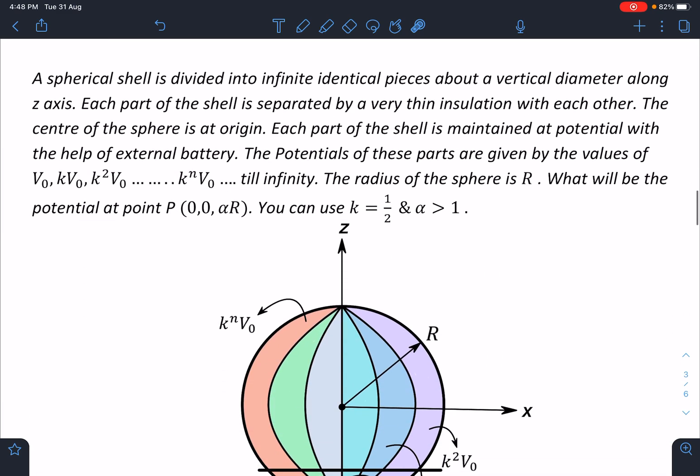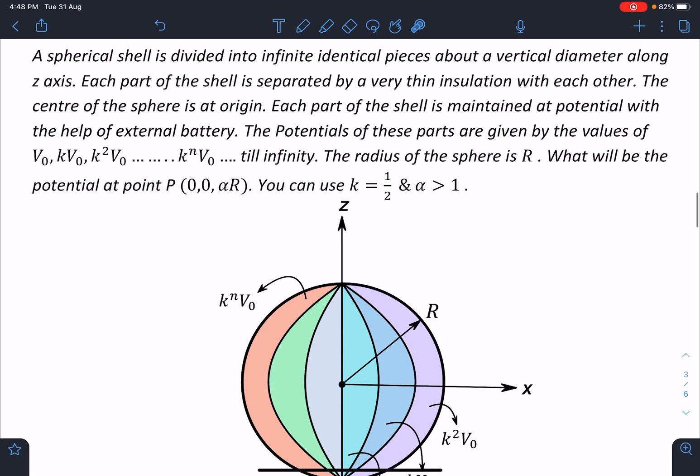Here is the problem statement: A spherical shell is divided into infinite identical pieces about a vertical diameter along the z-axis. Each part of the shell is separated by a very thin insulation with each other. The center of the sphere is at origin.